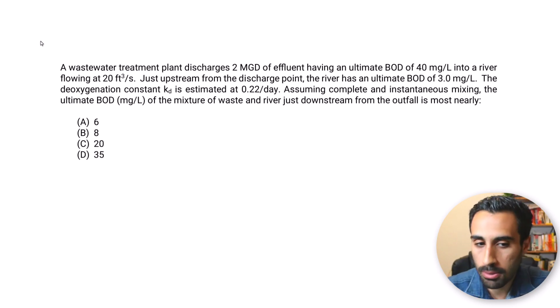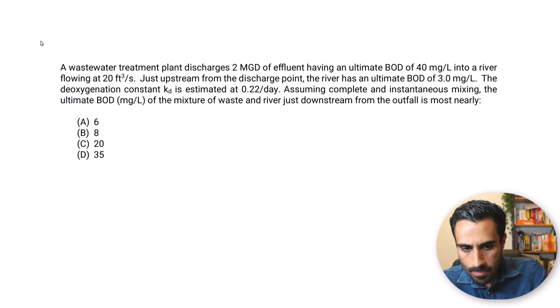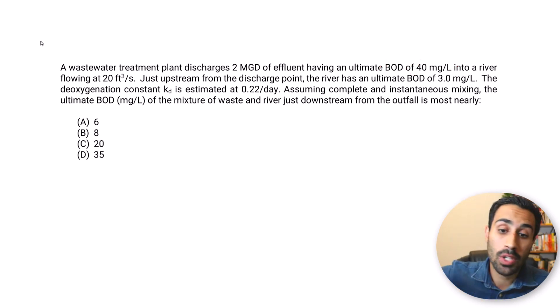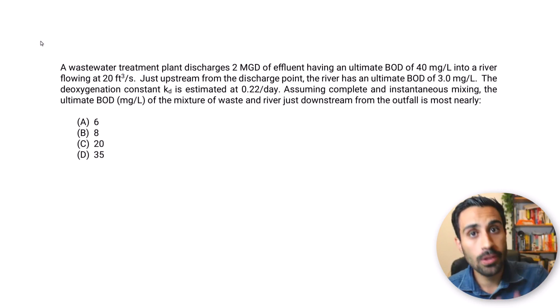So we know here we have a wastewater plant that discharges 2 MGD of effluent having the ultimate BOD of 40 mg per liter into a river flowing at 20 cubic feet per second. So already I see stuff going on. We have a wastewater plant discharging 2 MGD, that's million gallon per day, it's a flow rate, an effluent at the exit into a river that flows at 20 cubic feet per second. Talking about it is not just enough, we have to visualize this.